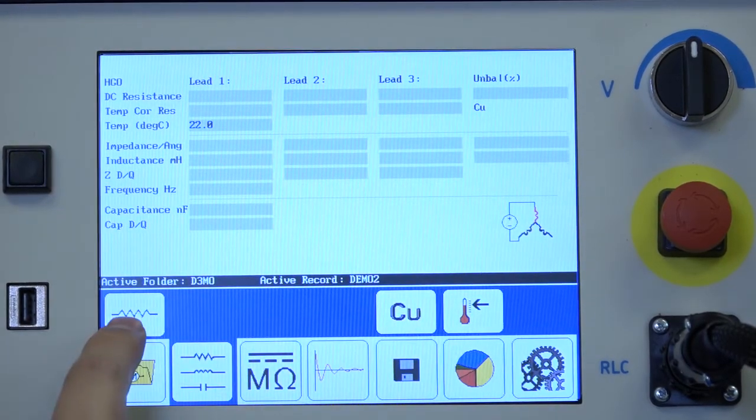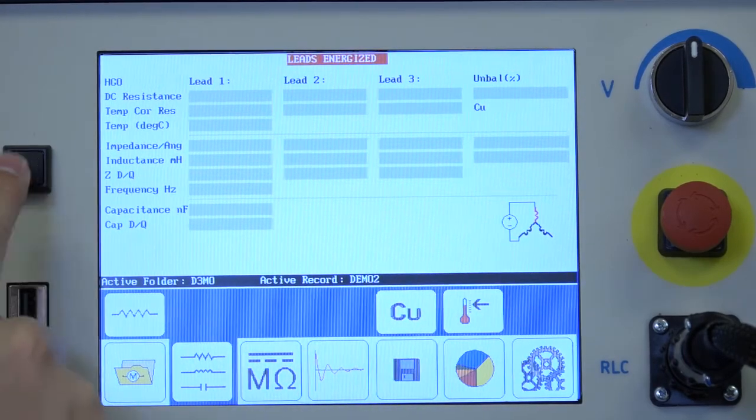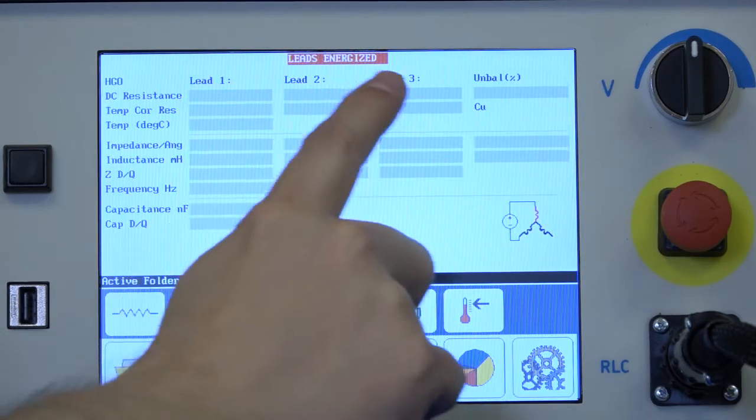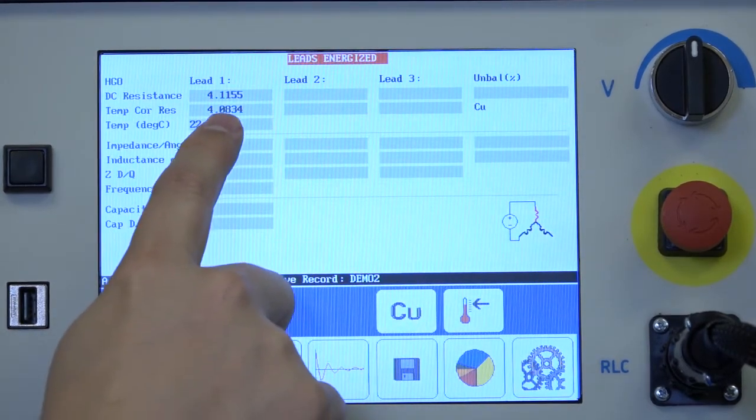So again resistance testing is selected. Now push the test button to initiate the test. And we see the lead's energized light is illuminated as it's making its measurement first for lead one.